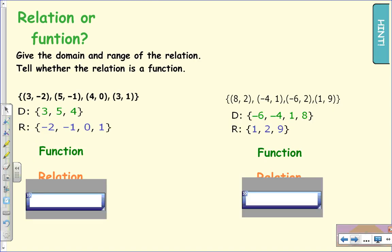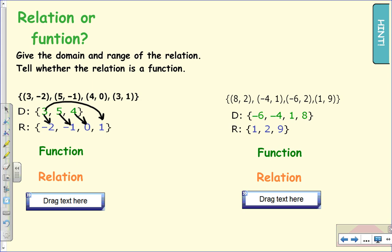Now, last of all, let's look at our ordered pairs. So for the ordered pairs, can you tell whether we have a relation or a function? So three matches with negative two. Five matches with negative one. Four matches with zero. And then three matches with one. Oh, can you see that three matches with two different outputs? So therefore, this is not a function. This is a relation.